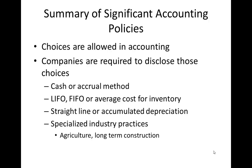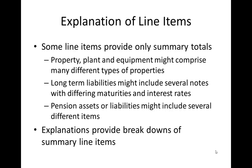Other disclosed choices include whether you use straight line or accelerated depreciation, and certain specialized industry practices. For example, in agriculture you book your revenue before you even sell your product — sometimes before it's even grown — because the markets and prices are well established. In long-term construction, you may also show revenue before you actually earn it. With installment sales, you might actually delay revenue recognition until after you have earned it. We'll go over some of those later.